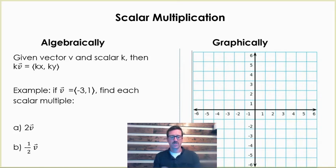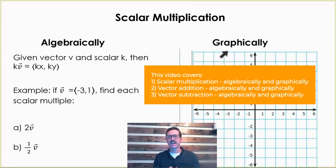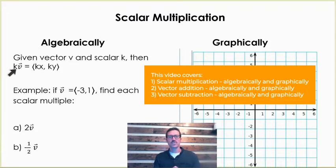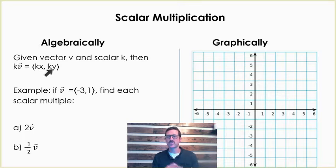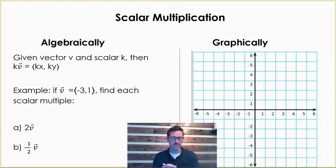Let's start with scalar multiplication. We're going to look at this both algebraically and graphically. Given a vector v and scalar k, to multiply the vector by that scalar, you just multiply the horizontal component by that scalar and the vertical component by that scalar. It's basically distribution.